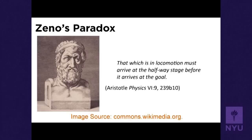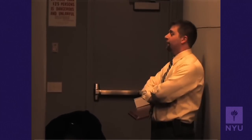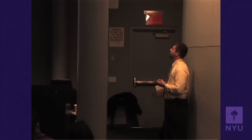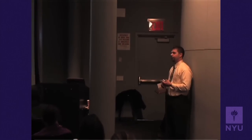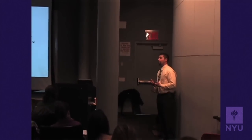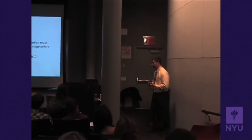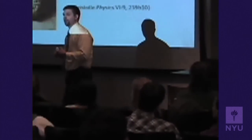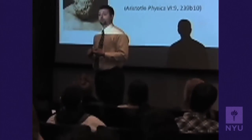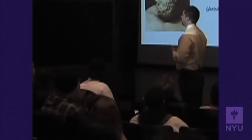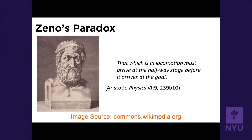Let's say that I'm finished teaching my class and I'm ready to leave, or maybe I want to escape, and I'd like to leave the classroom. How can I leave the classroom? Well, I have to get from where I am to the door. Now what Zeno is saying is that before I get to the door, I have to get to the spot which is halfway between me and the door — which would be somewhere around here. So here I am halfway to the door. Am I at the door? No.